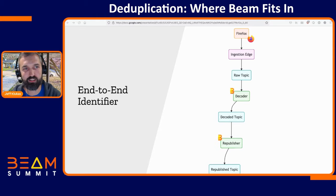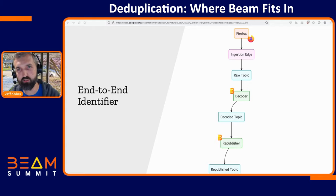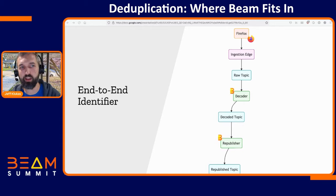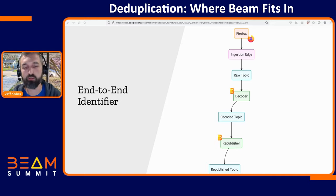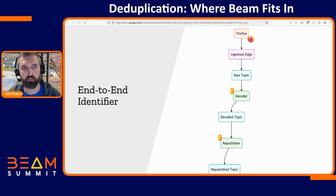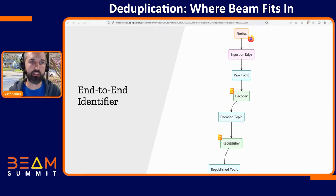However, there's a 10-minute window for the state used for this — both for Beam's built-in Deduplicate transform and for what Dataflow is doing. Imagine a Firefox client sends telemetry but crashes before getting the acknowledgement, then restarts an hour later and resends that message. We've now passed outside that 10-minute window of state, so the republisher Dataflow job won't recognize it as a message already seen — it's lost that state, and a duplicate will get through.